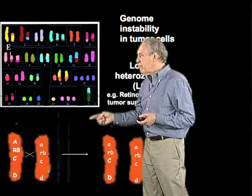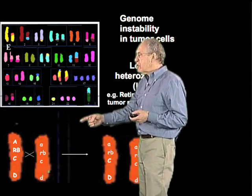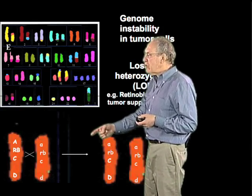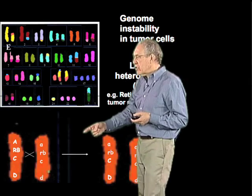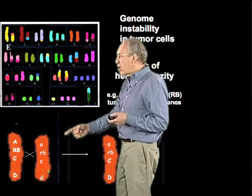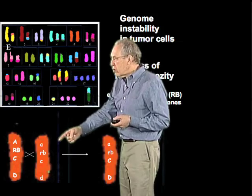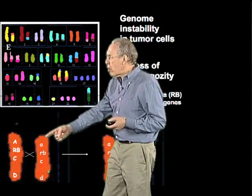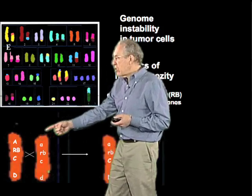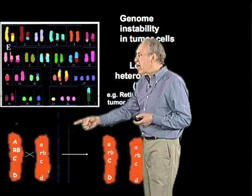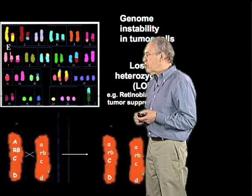When the mutations in the retinoblastoma gene were first found, it was thought that the retinoblastoma gene was a dominant mutation because people who inherited a single copy of this mutation were likely to end up with tumors of the eye, which is what retinoblastoma causes. But in fact, it is a recessive mutation, and it is only manifest in those cells which have lost the heterozygosity that was implicit in the original parent chromosomes.